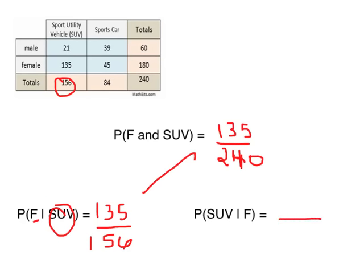When we switch the condition around, this time the condition is female. This says: find the probability of female SUV owners out of a total of females. So SUV owners — there are 135 of them that are female — over all females, which is 180. The condition, which is the second event, gives you the denominator. When there's no condition, it's out of the grand total, out of everyone. Keep that straight when you do conditional probability.